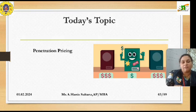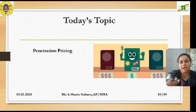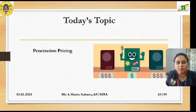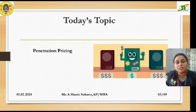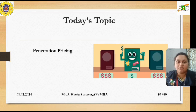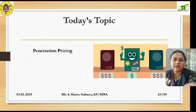The price in penetration pricing is lower when compared to other retail outlets, and gradually the price of the product is increased. So skimming means high price in the beginning that slowly comes down, whereas penetration means low price in the beginning that increases later on.